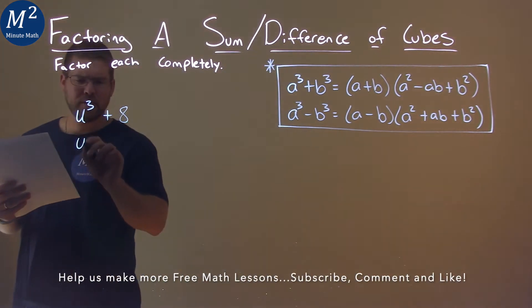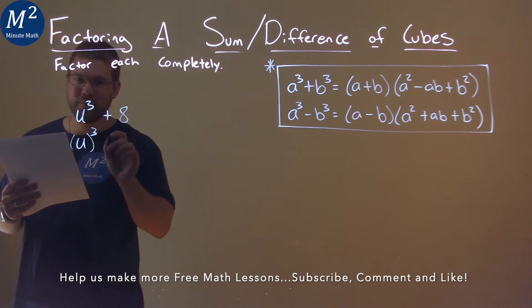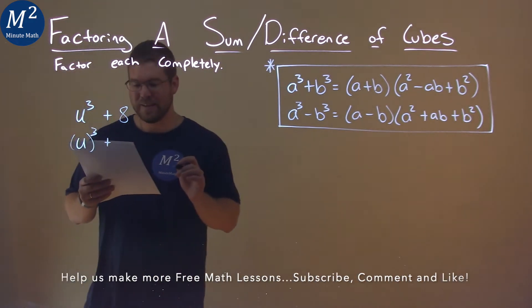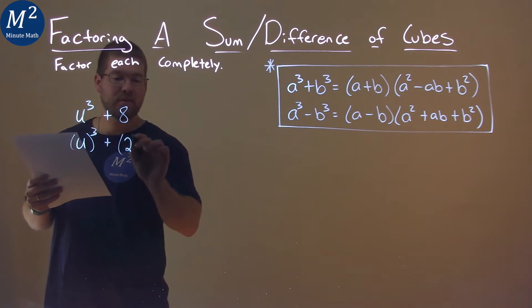Well, u to the third power is just u to the third power. 8 though, we can write this as 2 to the third power.